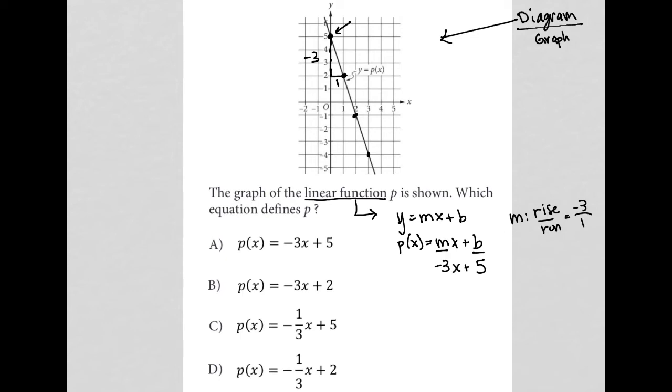So my equation that I should get here, or my function, should be P of x equals negative 3x plus 5. Now I could also, so we know that that makes answer choice A correct.